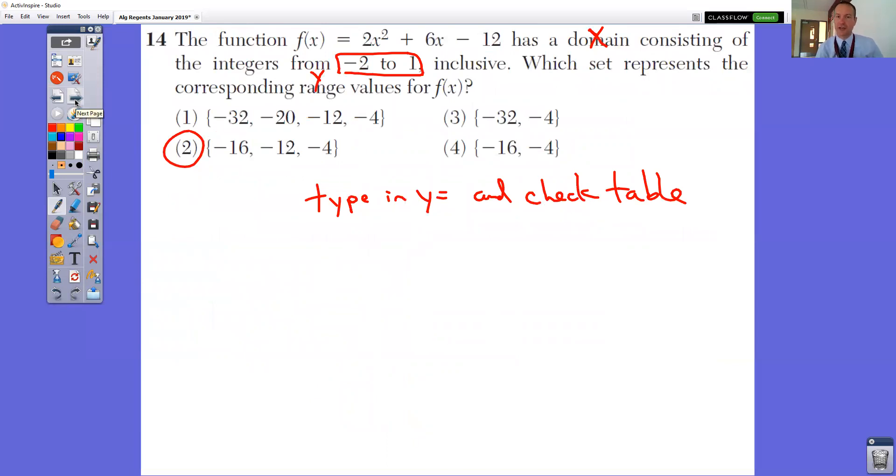In question number 14, the function 2x squared plus 6x minus 12 has a domain, domain means your x values, consisting of integers from negative 2 to 1. Which set represents the corresponding range values? Range is your y or f of x. Well, what you would do is type in this equation, 2x squared plus 6x minus 12, into your y equals and check the table. You want to know what your x values for negative 2, negative 1, 0, and 1 would be.